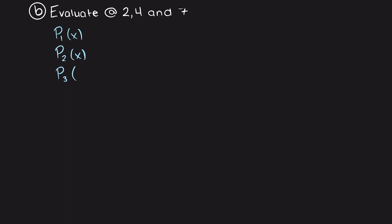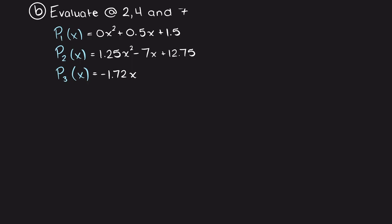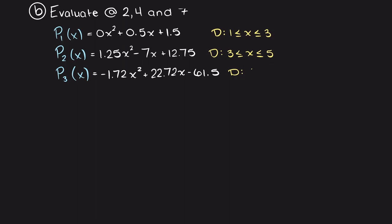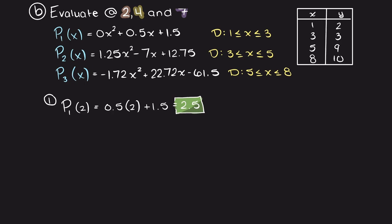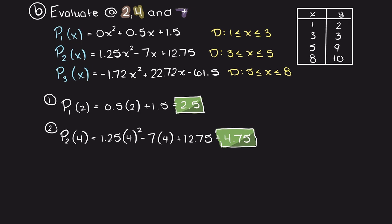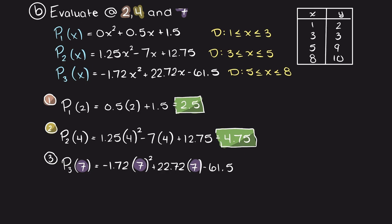Now back on our blackboard we can begin solving the second question. We were asked to evaluate the interpolating polynomials at inputs of 2, 4, and 7. I'll write out our polynomials in their respective domains. For an input of 2 we use our first interpolating polynomial, resulting in an output of 2.5. For an input of 4, that falls in the domain of our second interpolating polynomial, resulting in an output of 4.75. Lastly, for an input of 7 we use our third interpolating polynomial, resulting in an output of 13.15 — and we have now answered all the questions we were asked.